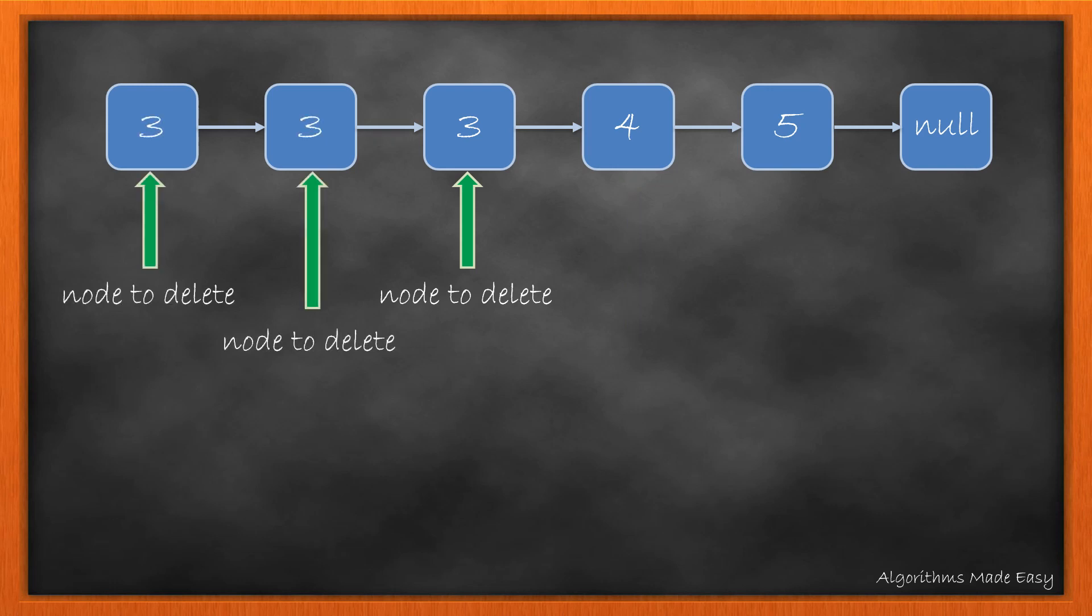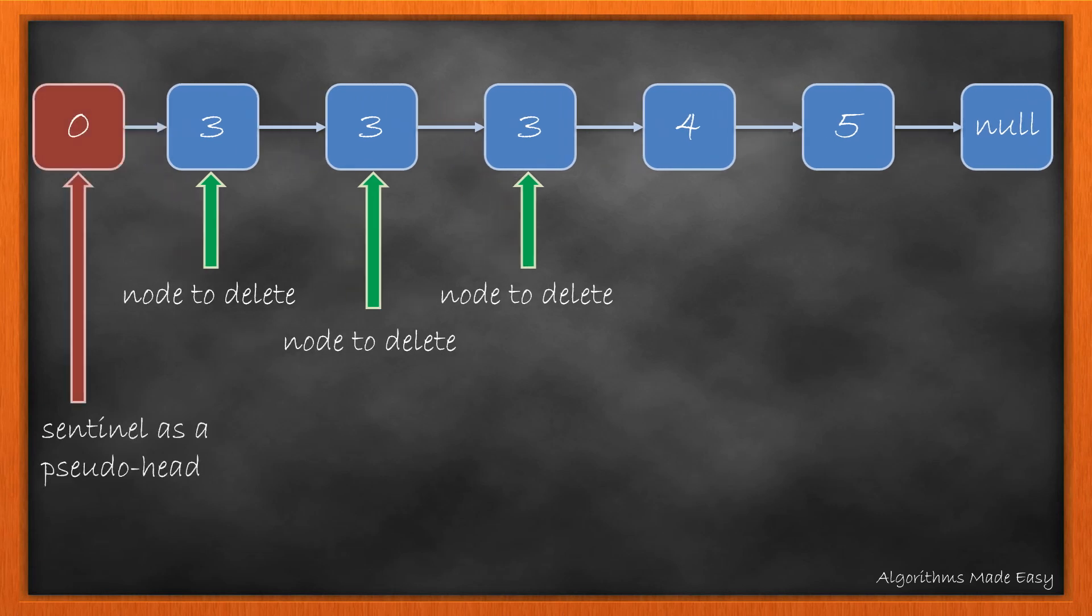But what if the node to be deleted is the head node? In this case, we do not have a previous pointer. In such cases, we can create a dummy head node that will act as a previous pointer.